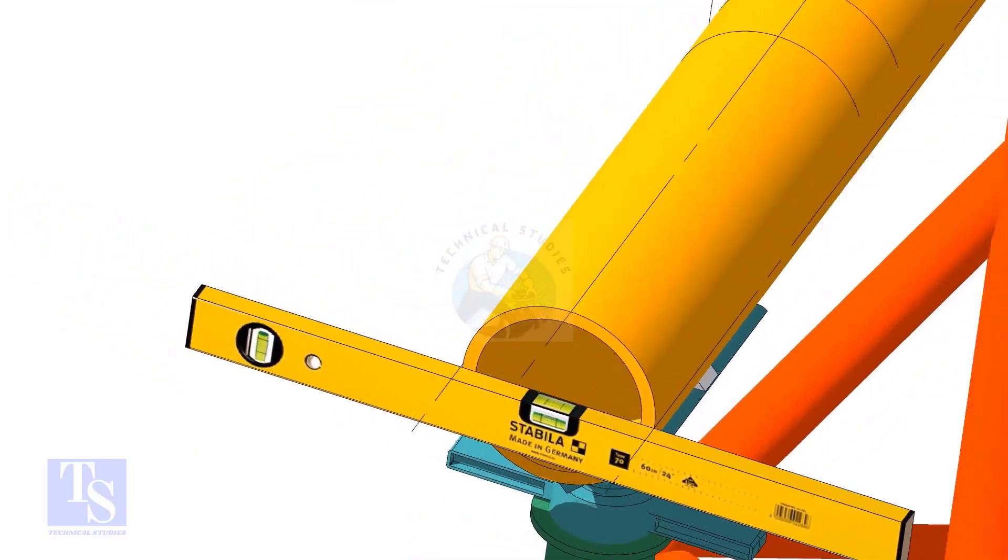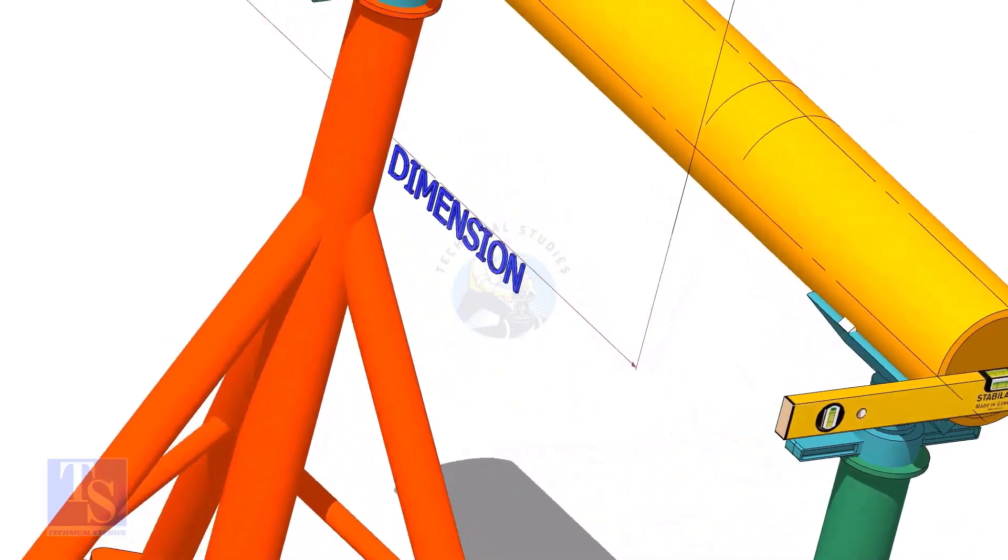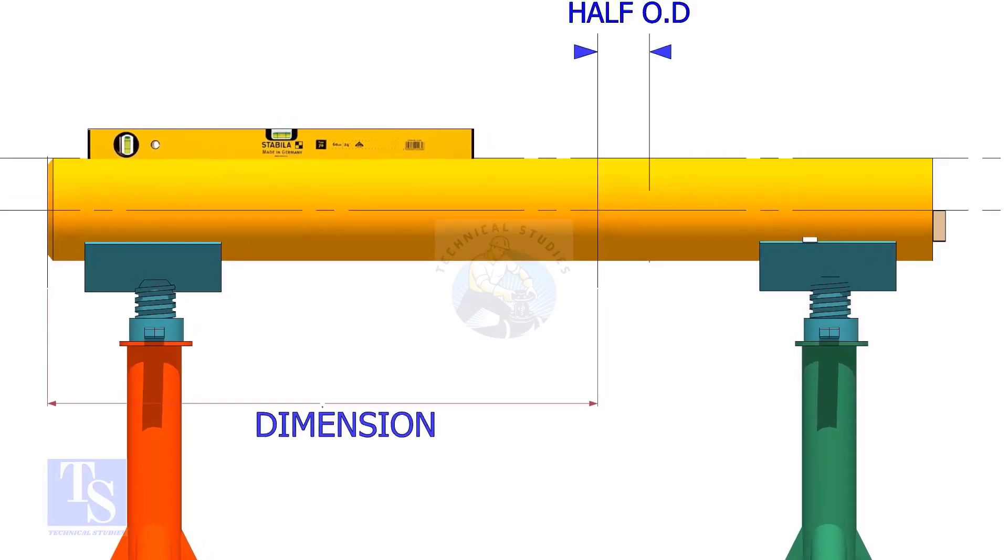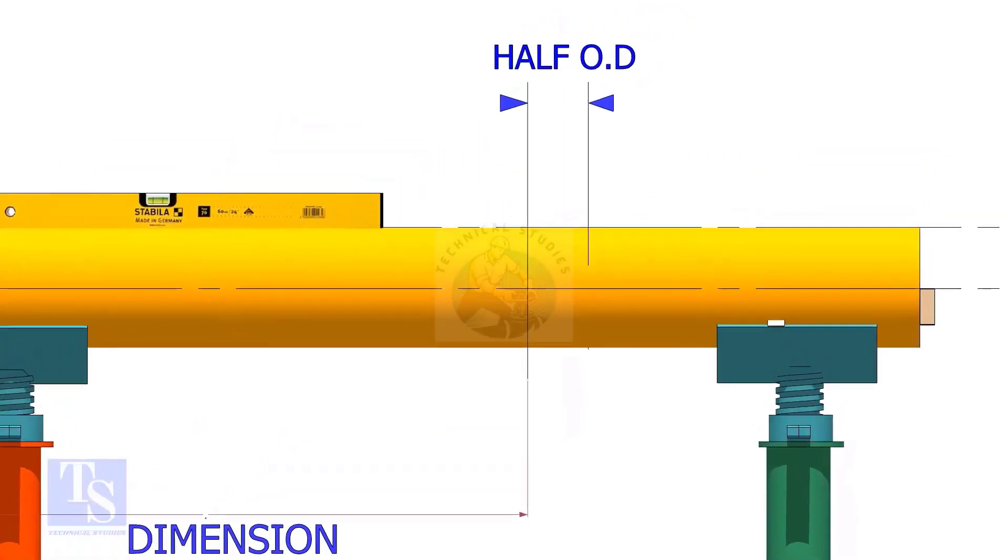Mark the center of the lateralette as per the drawing. Mark half OD of the header in the direction of the lateralette on the top of the pipe. This line is actually for inspection purposes only.